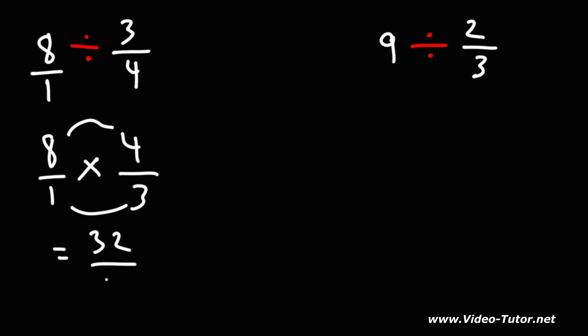1 times 3 is 3, so the answer is 32 over 3.